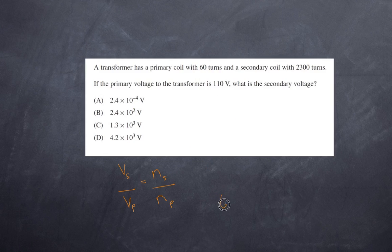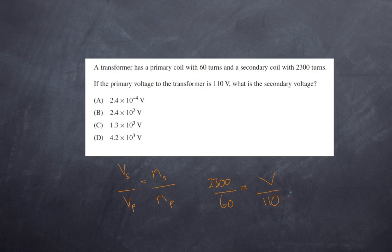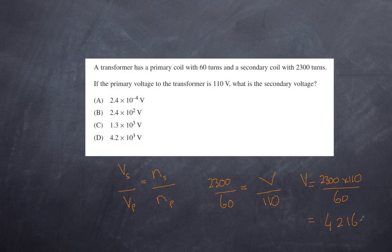Substituting in: the primary has 60 turns and the secondary has 2300 turns; the primary voltage is 110 volts. The secondary voltage equals 2300 multiplied by 110, divided by 60, which gives 4216.7 volts. To two significant figures, the best answer is D.